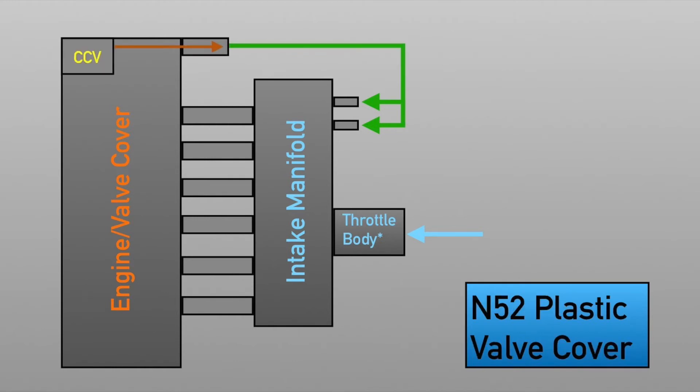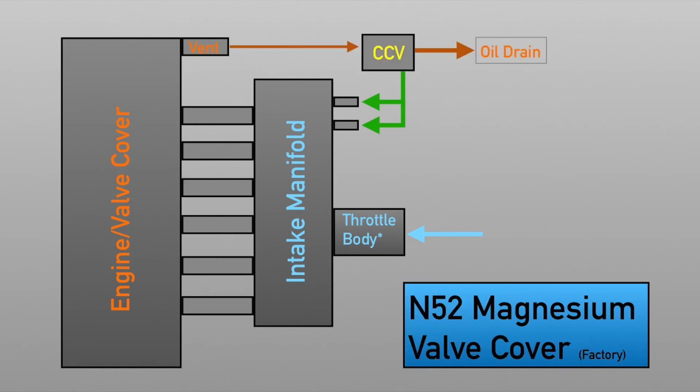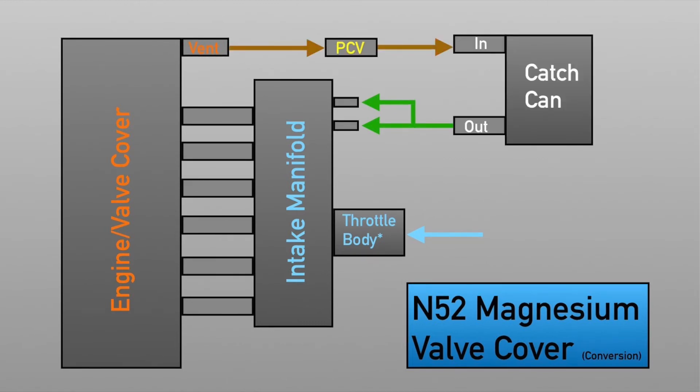Going back to the plastic valve cover, the CCV just has a drain hole which will allow any of the oil that it has separated to go right back into the cylinder head, and eventually down to the oil pan. And again, on the magnesium factory setup, there is a separate hose that will run down to the oil pan, not dissimilar to what happens on the M54 engine. So here is what I propose: from the vent of the magnesium valve cover, have that go into a catch can, then the catch can goes to the intake manifold.